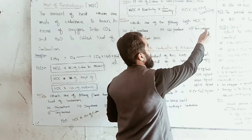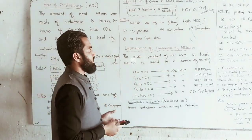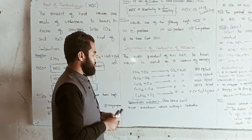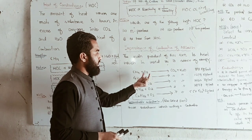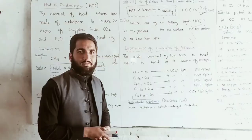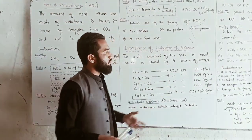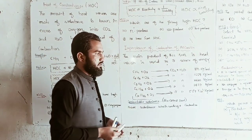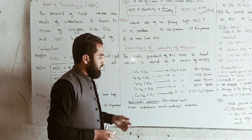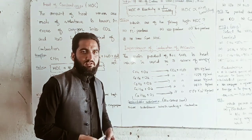Where the number of carbon atoms is the same (isomeric alkanes), greater branching means a slightly lower heat of combustion. Alkanes are used as a source of energy — methane, butane, and decane are all used as fuels. Those substances which undergo combustion are called combustible substances.